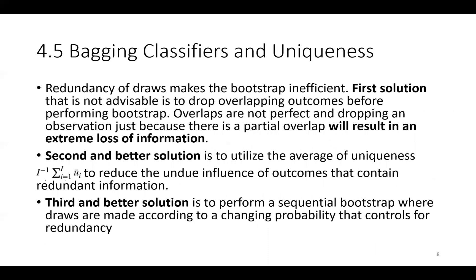So as a conclusion, redundancy of draws makes the bootstrap inefficient. First solution that is not advisable is to drop overlapping outcomes before performing bootstrap. Overlaps are not perfect and dropping an observation just because there is a partial overlap will result in an extreme loss of information. Second and better solution is to utilize the average of uniqueness to reduce the undue influence of outcomes that contain redundant information. Third and better solution is to perform a sequential bootstrap where draws are made according to a changing probability that controls for redundancy.